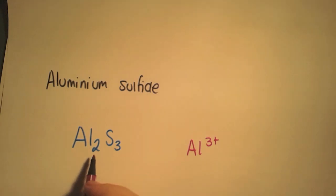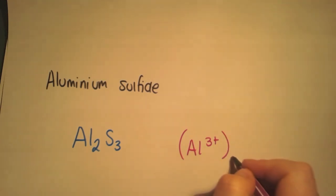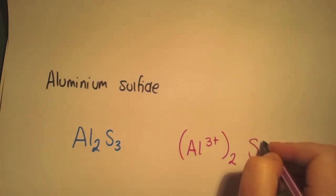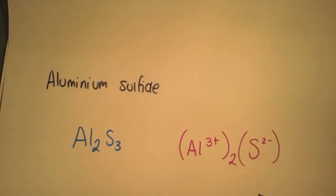Having a look at how many we've got, we've got two aluminums: brackets around aluminum and a two. For the sulfur, it's in group six like oxygen, so it becomes 2-. However, we have three of them, so again brackets around the whole ion and three on the outside of the brackets.